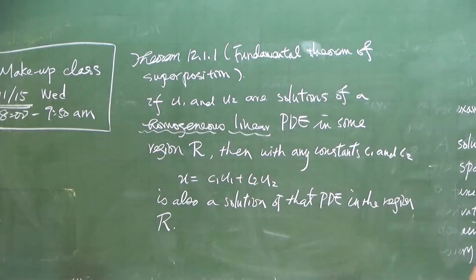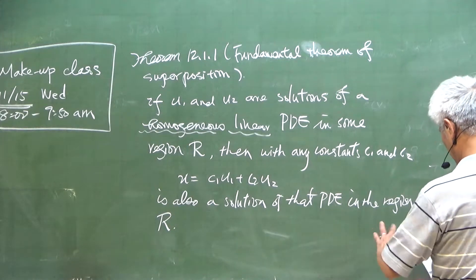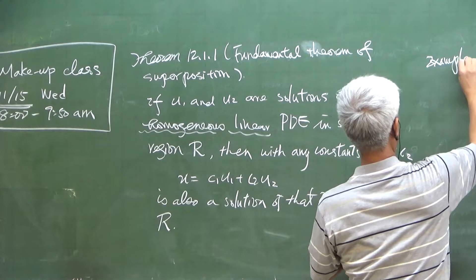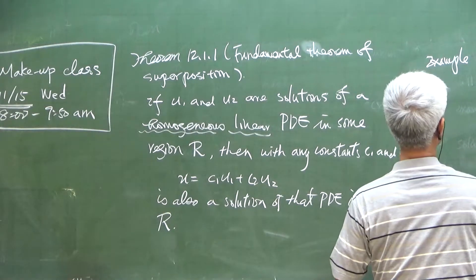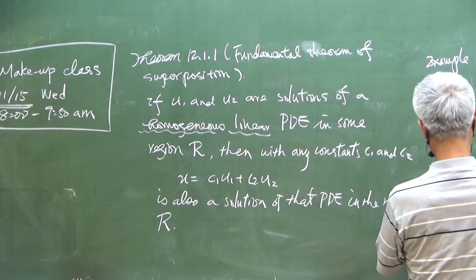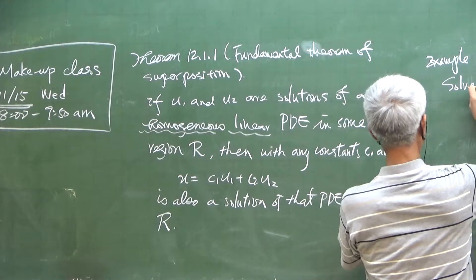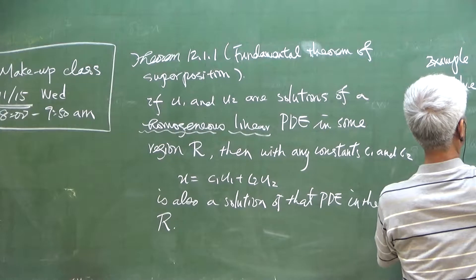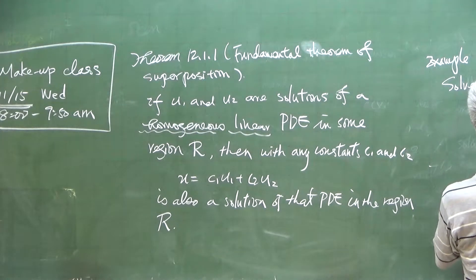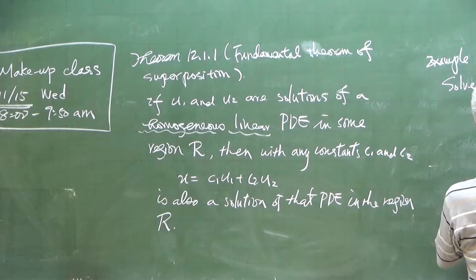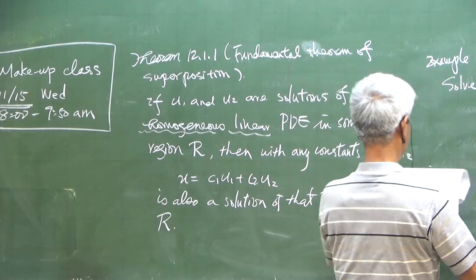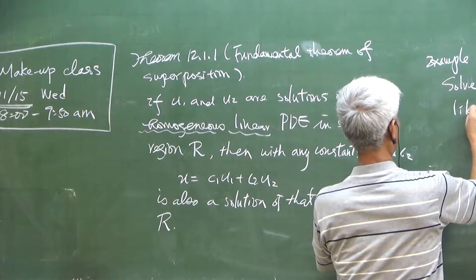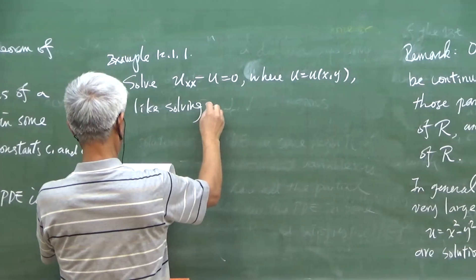I didn't skip the proof. I'd like to show a couple of examples. If you want to solve this partial differential equation, you have to solve the same problem — u is a function of two variables. It's like solving an ODE.